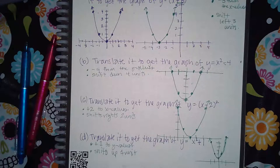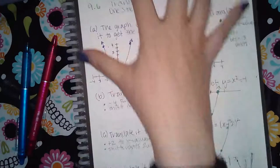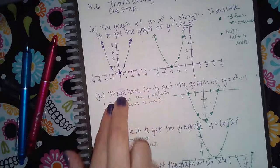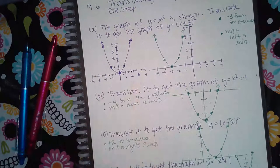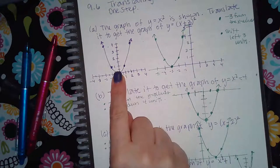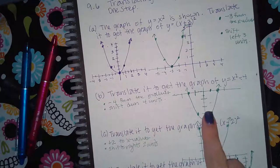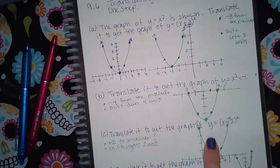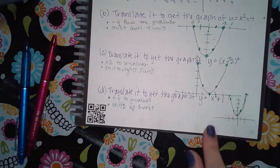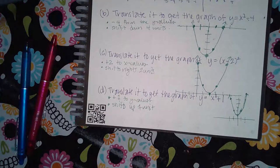In the computer, essentially what you're doing is taking this graph and grabbing it, then moving it up, down, left, or right into the correct position. You'll know the right position based on how you're supposed to be moving it: are you moving it to the left three units, down four units, to the right two units, or translating it up just one unit? You're just grabbing the graph and moving it in the correct direction the proper number of units.